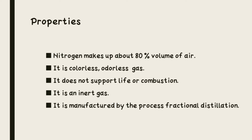Moving towards the uses of nitrogen gas: number one, it is used to make ammonia. The formula of ammonia is NH3, which is a very important chemical. This ammonia is used to form nylon, which is a kind of fabric, and other fibers — meaning ammonia is used in the textile industry.